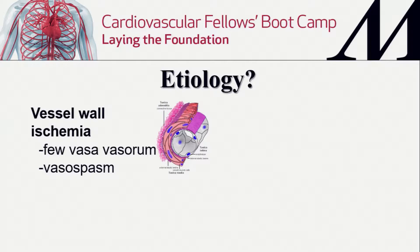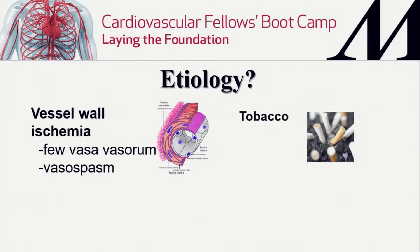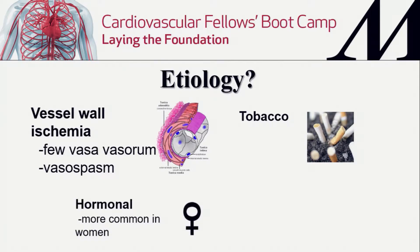The etiology is not well understood. There are four main categories. First, there's relative vessel wall ischemia — the distal two-thirds of the renal artery, where the majority of affliction occurs, is thought to have less vasa vasorum. Atherosclerosis affects the proximal third at the aorto-renal junction, but FMD tends to be in the distal two-thirds. The theory is that repetitive movement — the kidney bouncing — causes repetitive vasospasm, leading to damage that doesn't heal due to poor vasa vasorum.